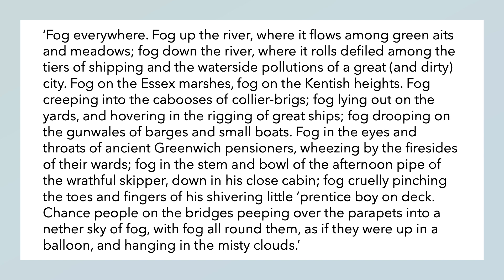He tells us that the fog is everywhere — it's up the river where it flows among green eights and meadows. Now, an 'eit' is a little island in the middle of a river; sometimes you get those little bits of land in the middle of water. Fog down the river where it rolls defiled among the tiers of shipping and the waterside pollutions of a great and dirty city — rolling right the way down the river. When he says the word 'defiled', that kind of means to be changed or damaged in some way. So it changes as it rolls along, and at the same time it damages what it sees — it changes what we see. There is fog on the Essex marshes, fog on the Kentish Heights — these are different parts of land that you would see.